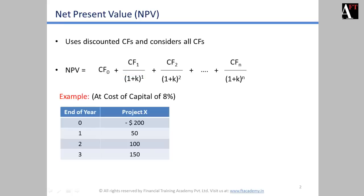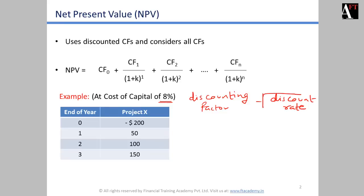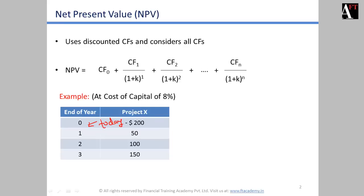Let's take an example. Say the cost of capital in our assumption is 8% as the discounting factor. Remember, the cost of capital is also known as the discounting factor or, more appropriately, the discount rate. For project X, the cash flows occurring at the end of various years — year 0, 1, 2, 3 — where year 0 means today. The cash flow at time 0 is minus $200, which is also termed as the initial investment in capital budgeting projects.